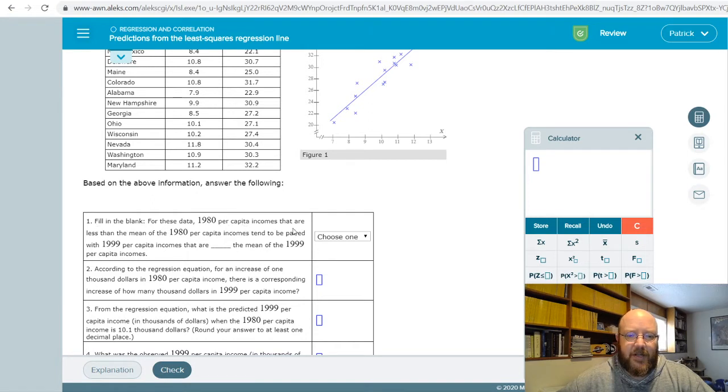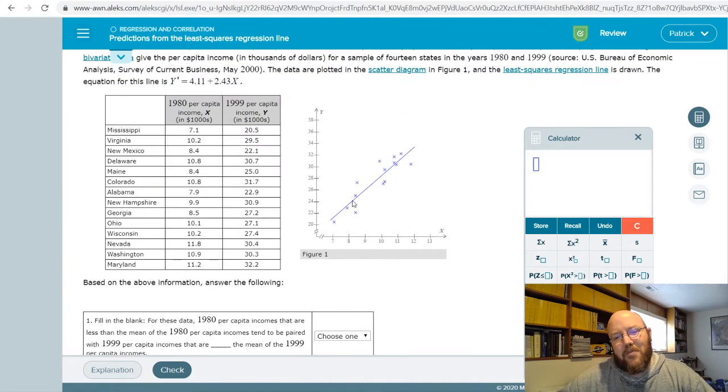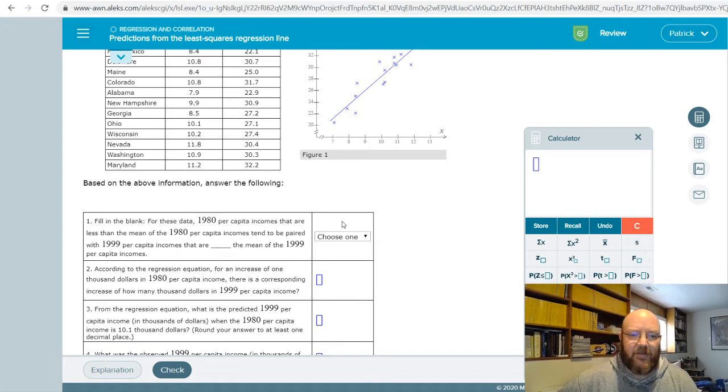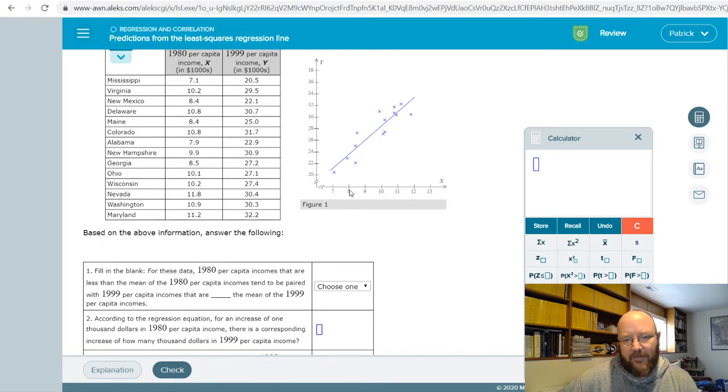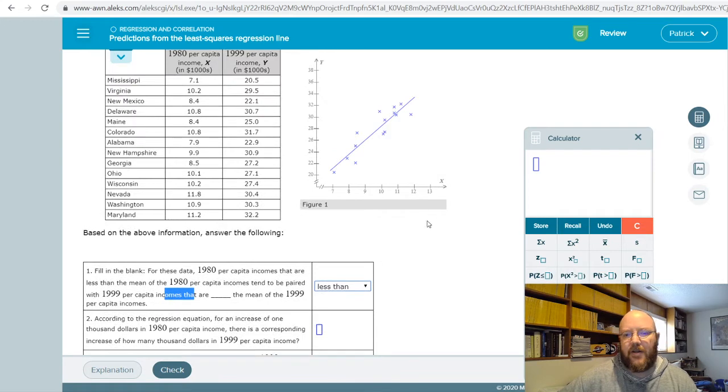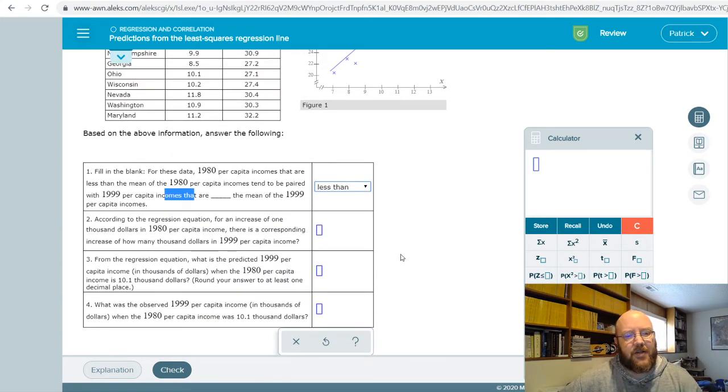So first of all, fill in the blank. For these data, 1980 per capita incomes that are less than the mean of 1980 per capita income tend to be paired with 1999 per capita income that are less than the mean. So there's a lot of stuff to talk about here, but basically it's just asking you about the relationship. Is it a positive relationship or is it a negative relationship? Remember, if you did the previous ones, reading these from left to right, positive relationship goes up, negative relationship goes down. And so it's just asking you, if x is small, is y small? And so the answer to that question is yes. Just take a look at this one since we have a positive relationship. If our x value along this axis is small, so like 7 in this one, then our y value is small. And so that our 1980 incomes that are small, less than, are corresponded with 1999s that are less than or small. And if it's a negative relationship, it would be the opposite. Hopefully we'll get one of those just so I can kind of show you the difference.